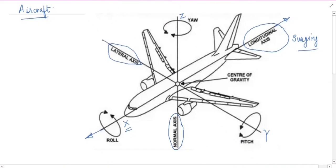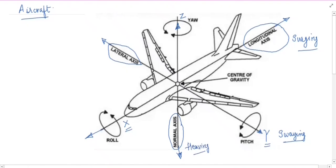Similarly, this aircraft can move left and right along the lateral axis, that is our y-axis. This is the second translational motion along the y-axis, and this left-and-right motion of the aircraft is known as swaying. Similarly, this aircraft can also have translational motion along the normal axis, that is the z-axis — it can go up or it can come down. This up-down motion along the normal axis or z-axis is known as heaving. So we have seen that this aircraft can have three translational motions along the longitudinal, lateral and normal axes.